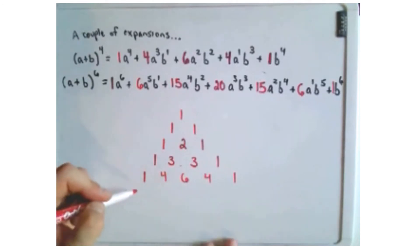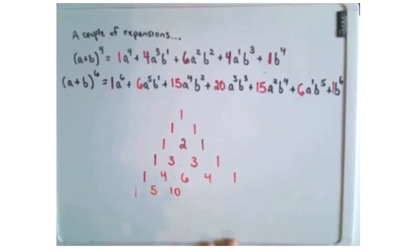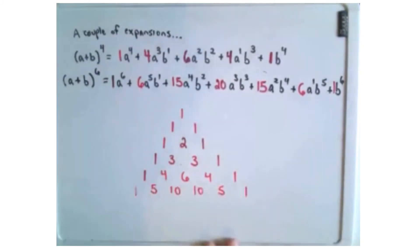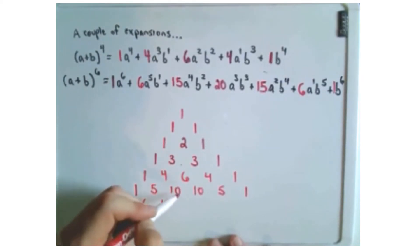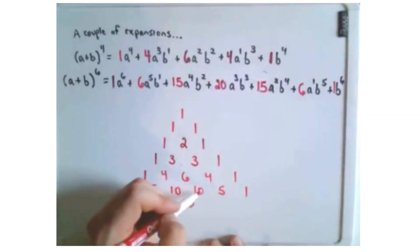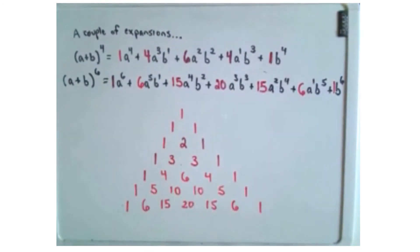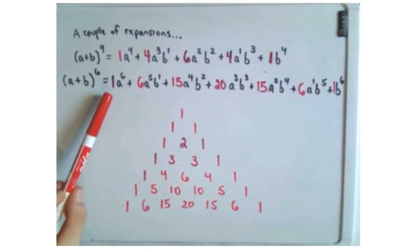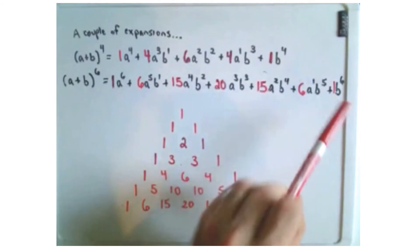Let's do two more rows. For the fifth power: 1 and 4 gives 5, 4 and 6 gives 10, 6 and 4 gives 10, 4 and 1 gives 5, then drop down a 1. For the sixth power: 1 and 5 gives 6, 5 and 10 gives 15, 10 and 10 gives 20, 10 and 5 gives 15, 5 and 1 gives 6, then stick a 1 down. The coefficients on (a + b) to the 6th were 1, 6, 15, 20, 15, 6, 1 — exactly this row.